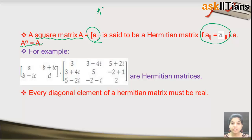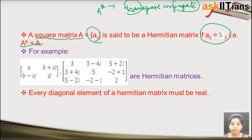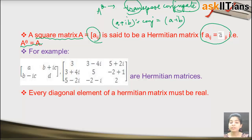Here, A^θ is called the transpose conjugate, also called the conjugate transpose. Recall that for a complex number a + ib, its conjugate is a − ib — the conjugate of a complex number is obtained by changing the sign of the imaginary part.